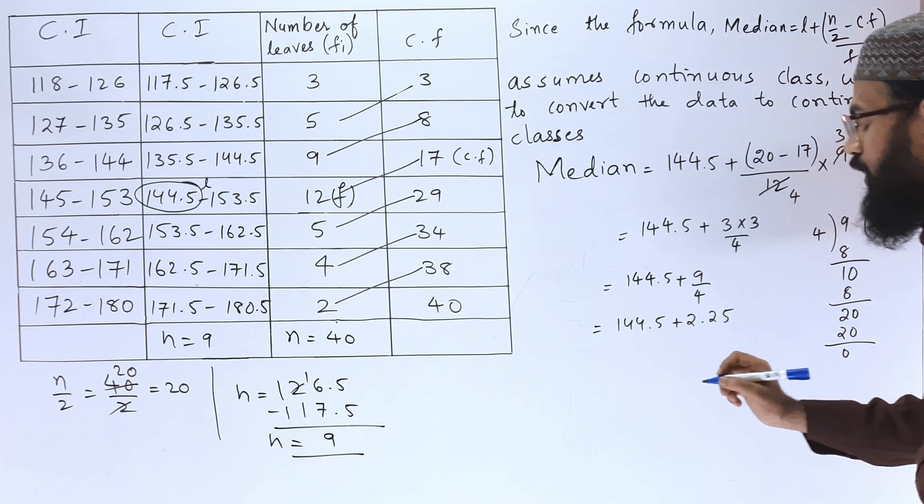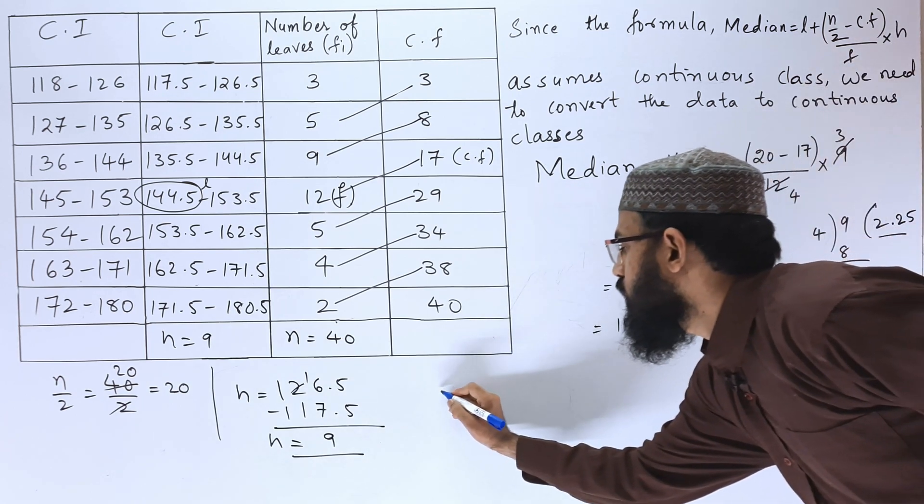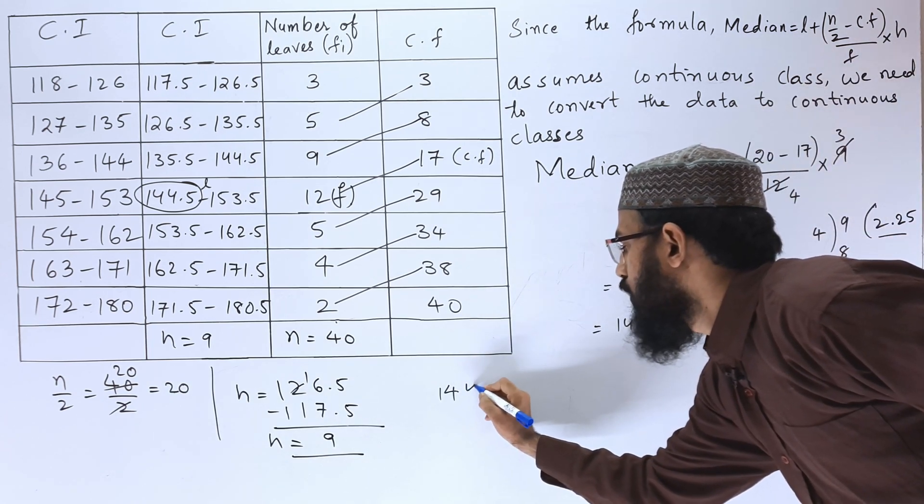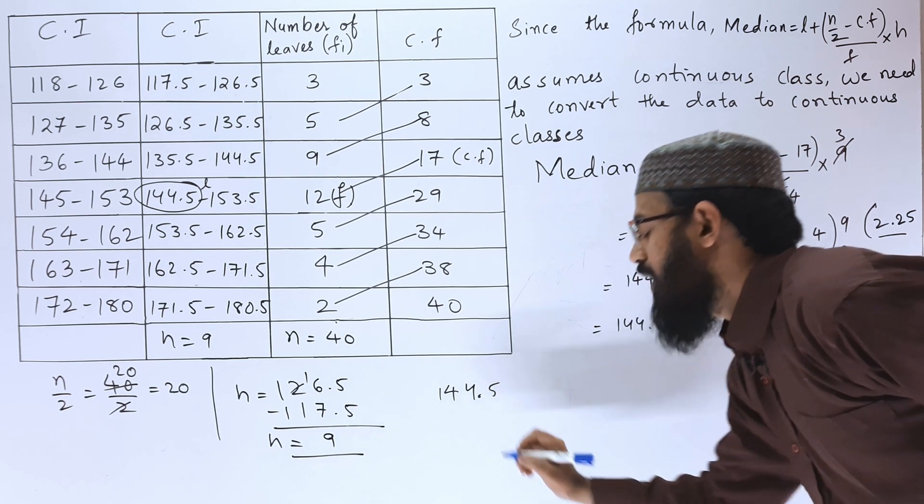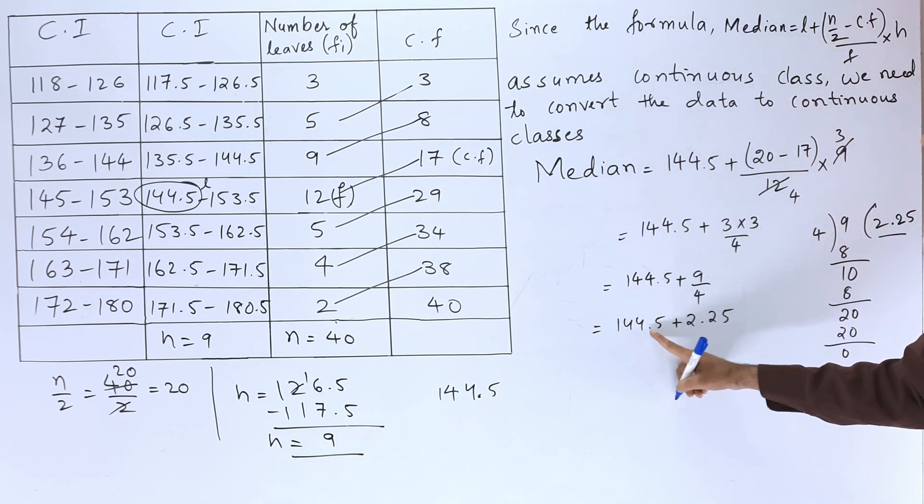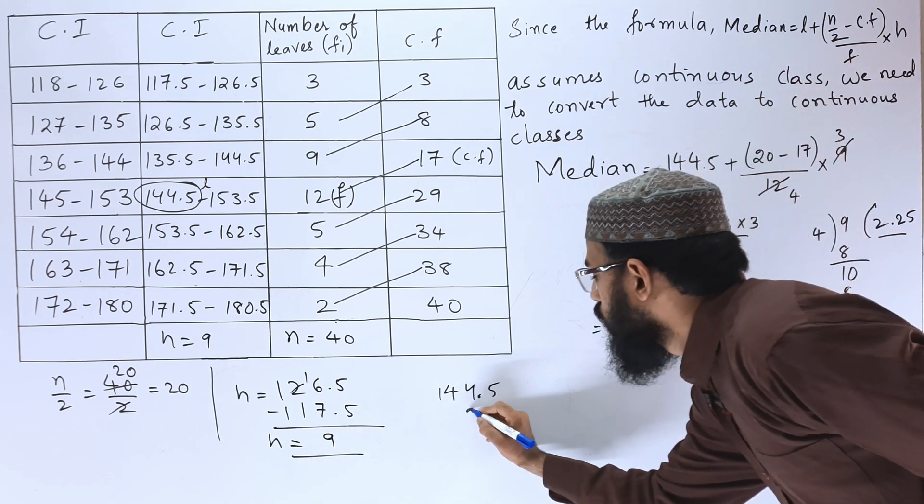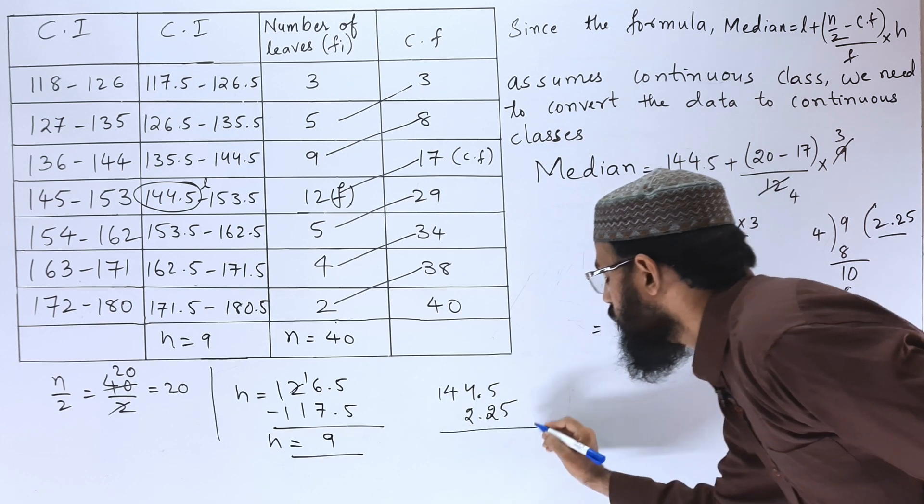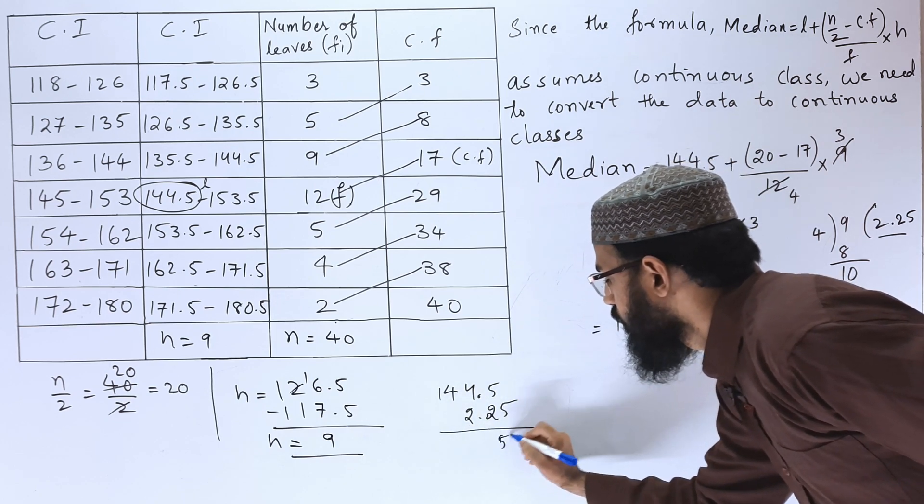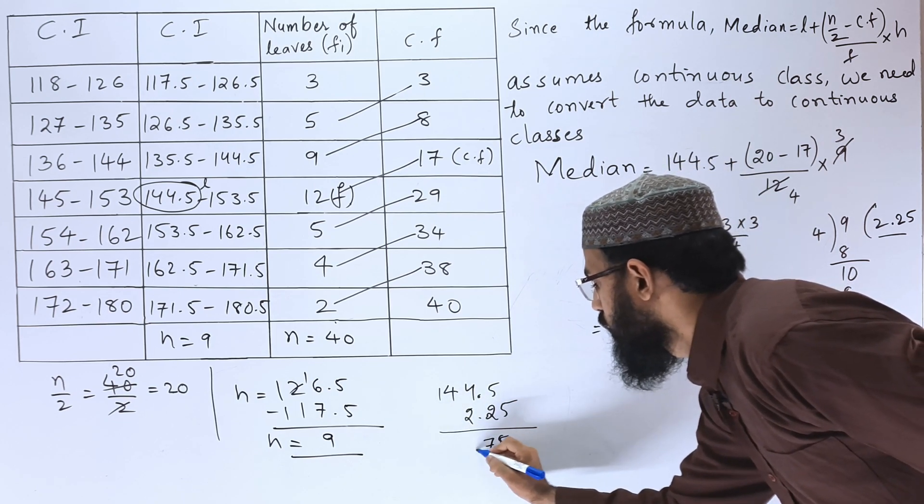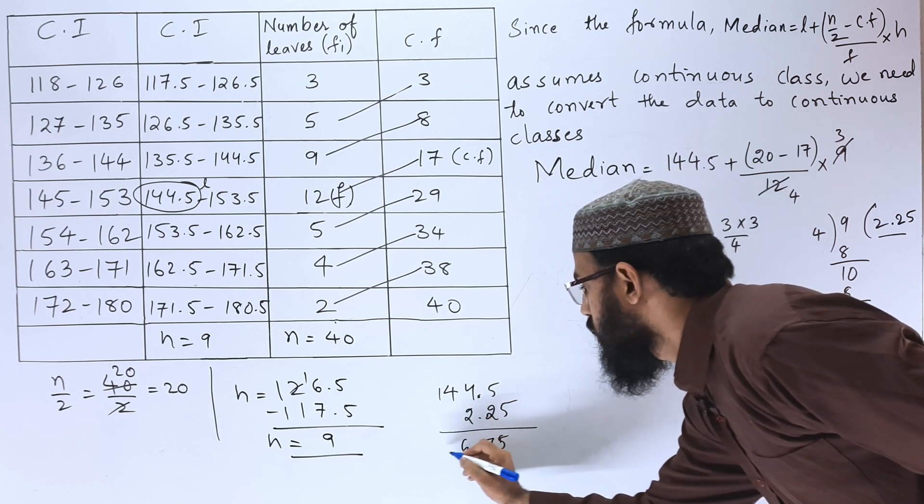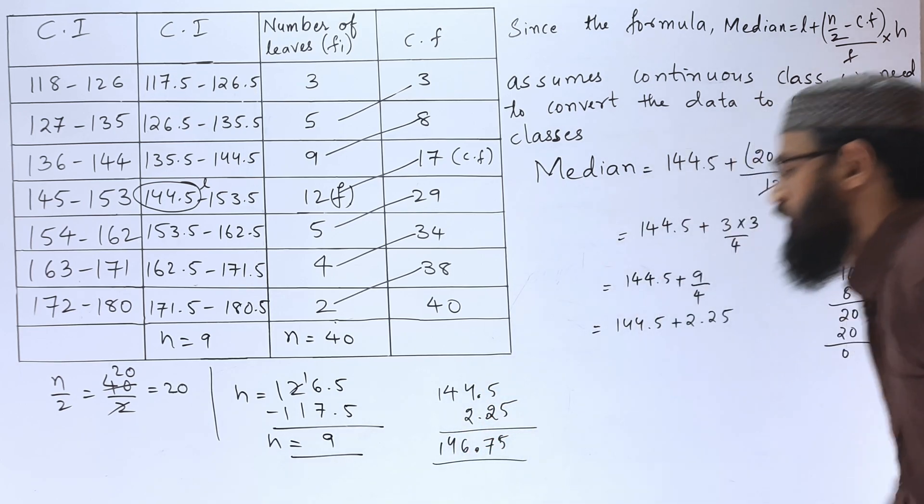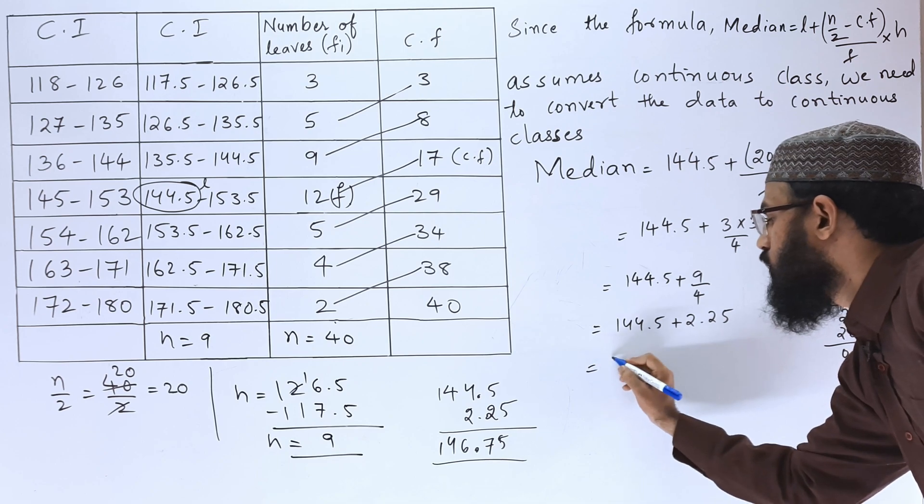144.5 plus 2.25. For adding this, we have to do like this: 144.5, we have to remember that decimal should come below the decimal, so 2.25. 5 plus 2 is 7, 4 plus 2 is 6. So 146.75. The median is 146.75.